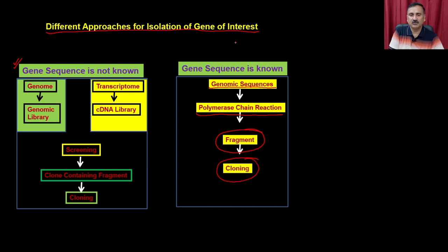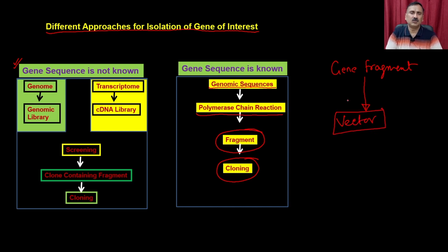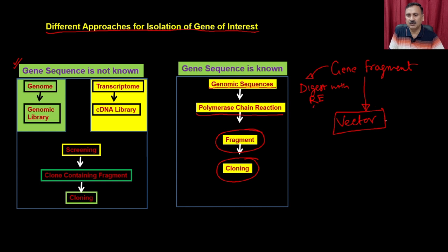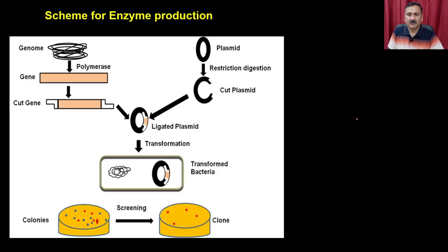Whether you use the genomic library approach or the PCR approach, you get the gene fragment which has to be cloned into a suitable vector. Cloning a gene fragment into a vector is a multi-step process: you take the gene fragment and digest it with restriction enzymes, and then you also cut the vector with the same set of restriction enzymes.